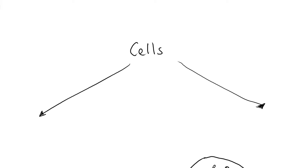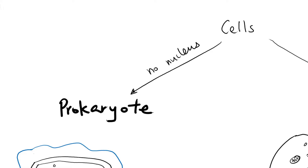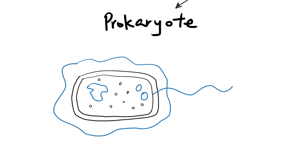Cells that don't have a nucleus are called prokaryotes, sometimes also called prokaryotic cells. Here we're going to look at the general structure of a prokaryotic cell. Different types of prokaryotic cell would have a slightly different structure, but this gives you a general idea about what most of them would have.